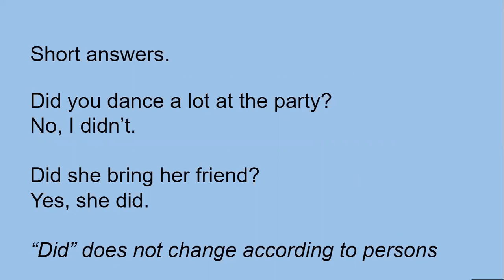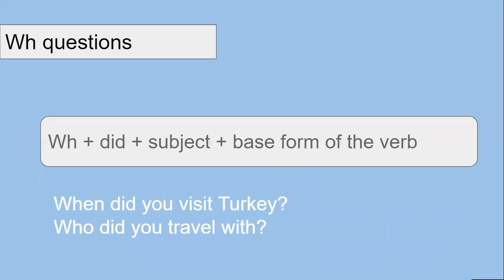Note that neither did nor the main verb changed according to the person. In WH questions, we have a similar structure, but we put question words in front of the auxiliary verb. For example, when did you visit Turkey? Who did you travel with?